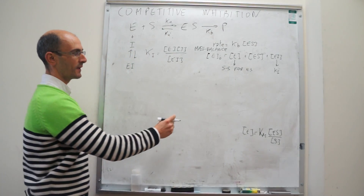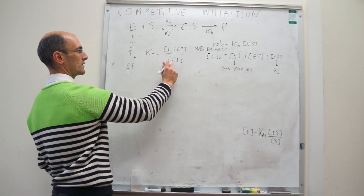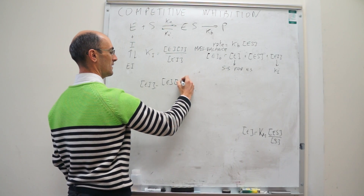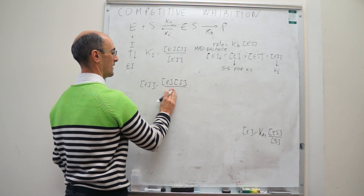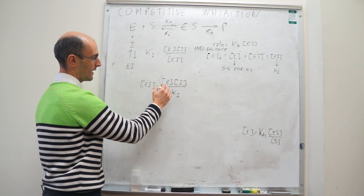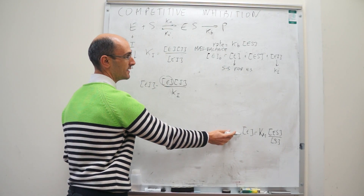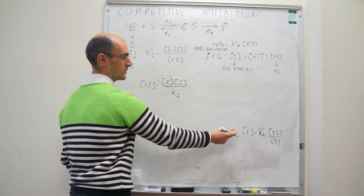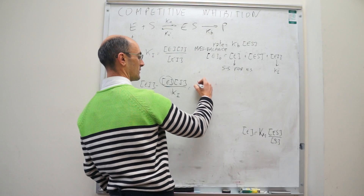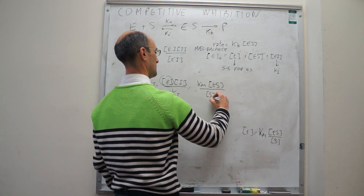For the [EI] term, we use the dissociation constant of the enzyme-inhibitor complex. From K_I = [E][I]/[EI], we get [EI] = [E][I]/K_I. Since we already have [E] = K_M[ES]/[S], substituting gives [EI] = K_M [ES] [I] / (K_I [S]). That is our expression for [EI], which we'll plug into the mass balance.